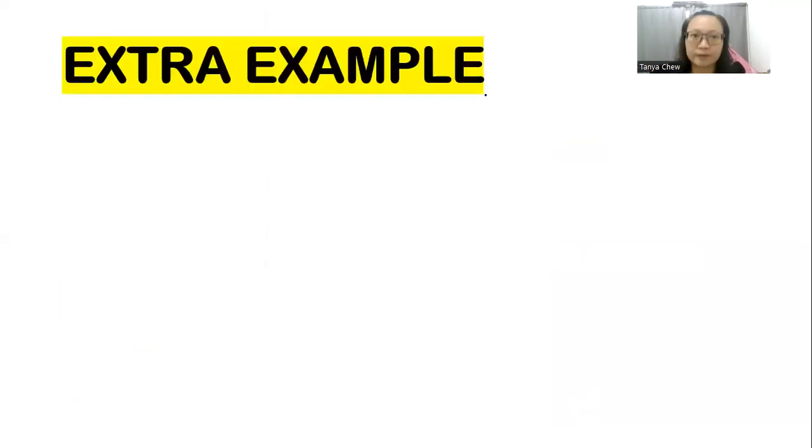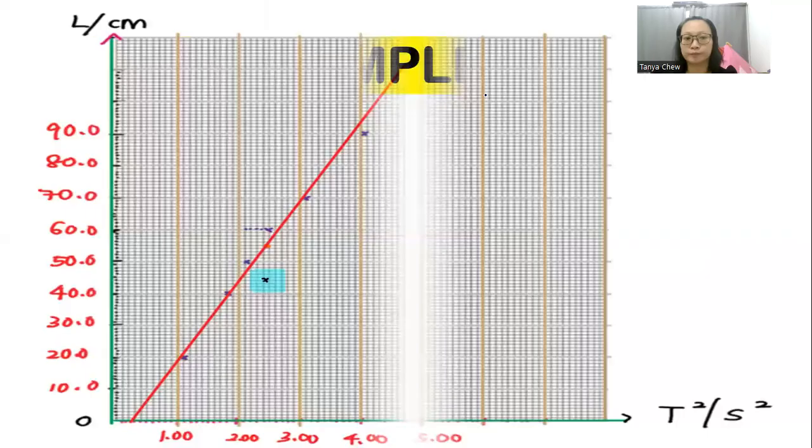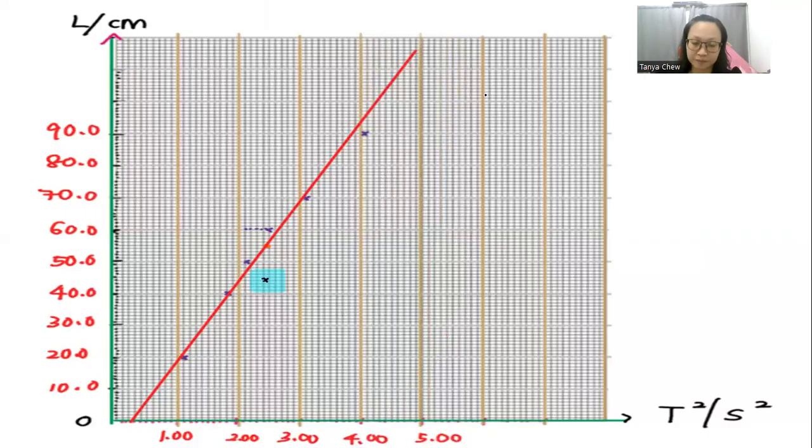So I am giving you one extra example. This is a graph. Let's say one of the readings is actually too far from the best fit line. You look at the horizontal distance: one square, two square, three square, and four squares—four small little squares deviated from the best fit line. So what should you do about it? Because the examiner is going to penalize one mark for the quality of your graph.